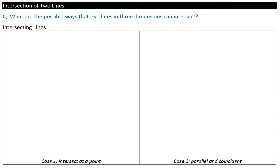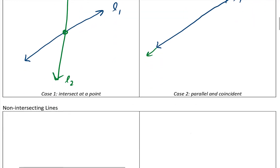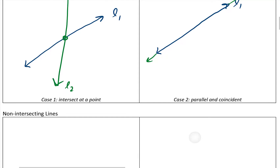Next up is the intersection of two lines in three-space. What are the possible ways that two lines in three dimensions can intersect? One way is that the two lines intersect at a point. The second way is if they are parallel and they coincide with each other, so line two sits on top of or in line one. Those are the two cases where they can intersect: in a line or at a point.